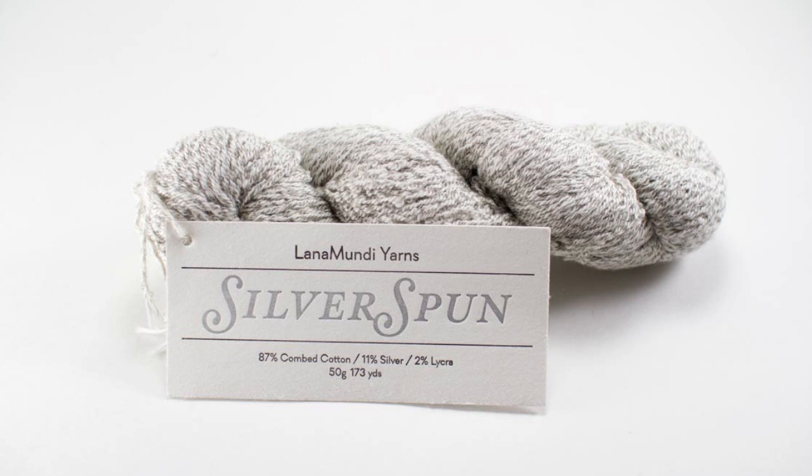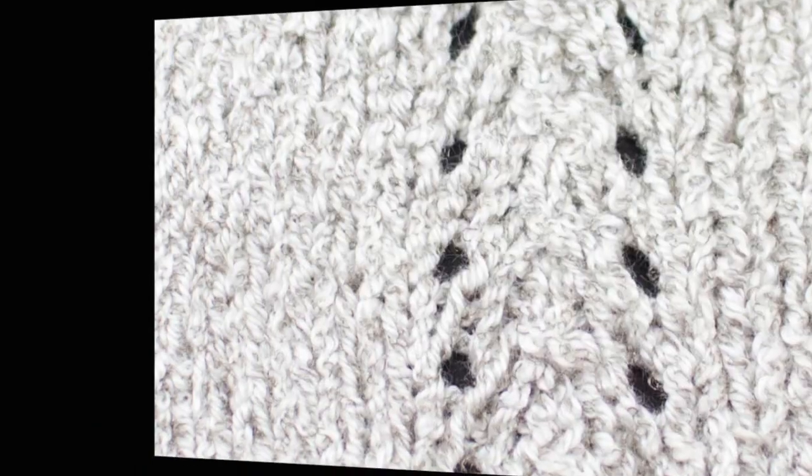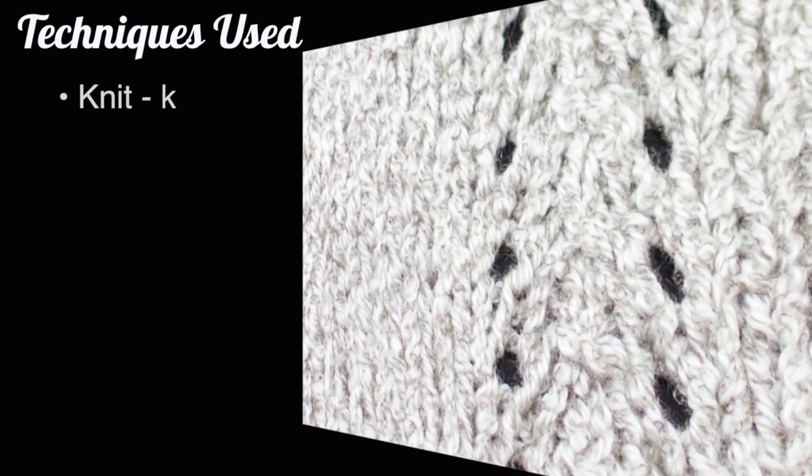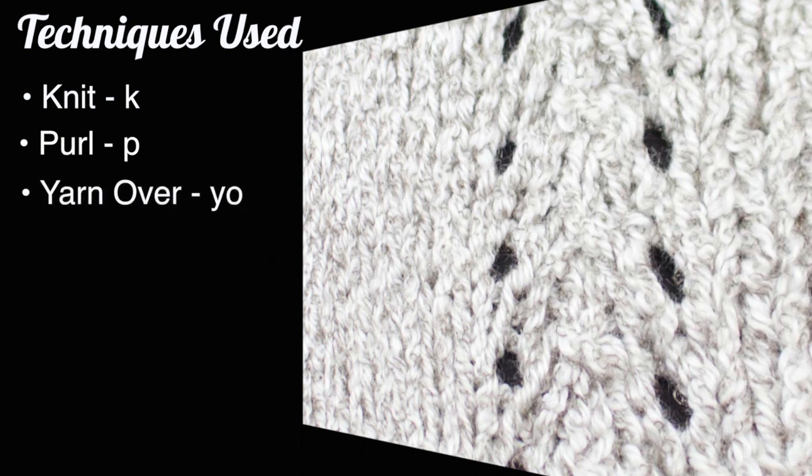Today we are using Lana Mundi Yarns Silver Spun, a North Carolina sock weight cotton spun yarn with pure silver. For this you need to know the following techniques: knit, purl, yarn over, slip stitch, knit two together, pass slip stitch over.